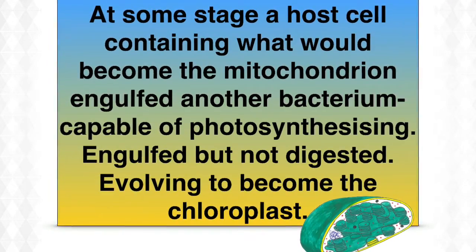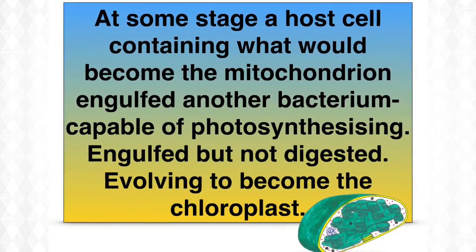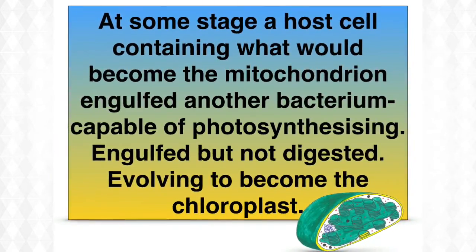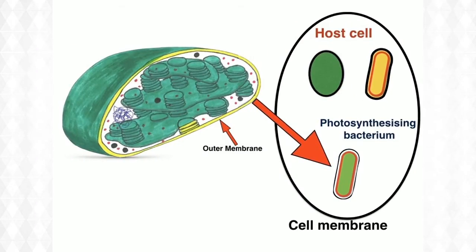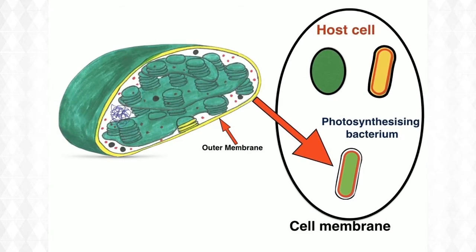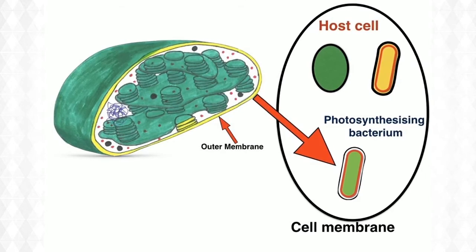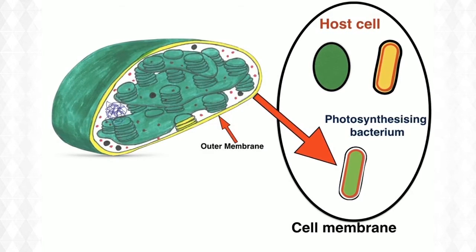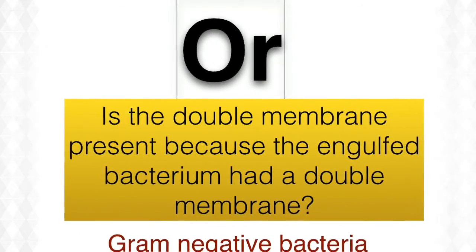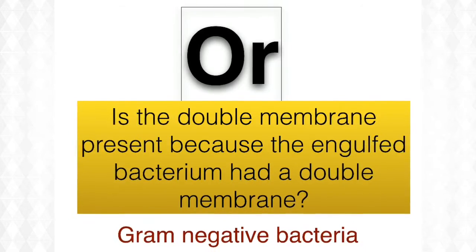At some later stage, one of those host cells that had previously engulfed the ancestor to the mitochondrion engulfed another bacterium — this one a photosynthesizing bacterium — and this is what we think evolved into the chloroplast. Some scientists think that when this ancestral photosynthesizing bacterium was engulfed, it was surrounded by a vesicle originating from the host cell's membrane, giving rise to the outer membrane of the chloroplast. Or was it simply that the original bacterium engulfed was a gram-negative bacterium with a double membrane?